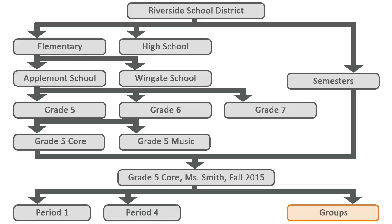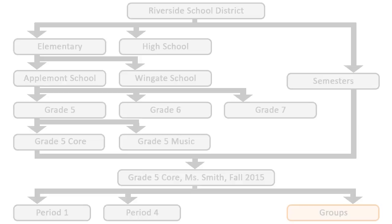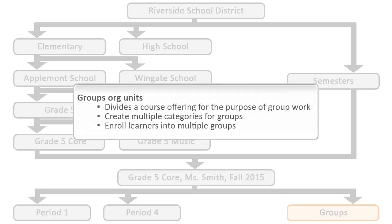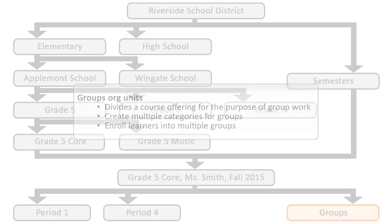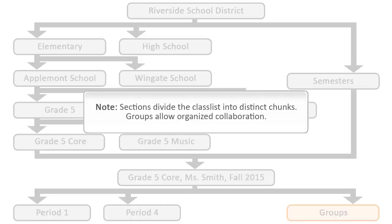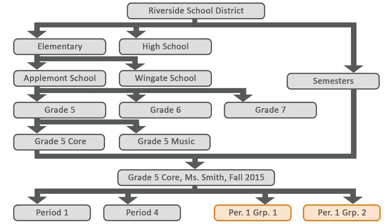Groups provide an additional layer of organization to the tree structure. Groups divide a course offering for the purpose of group work. You can create multiple categories for groups and enroll learners into one or more groups. Sections divide the class list into distinct chunks, while groups allow organized collaboration. In this example, the class is divided into two collaborative groups for an in-class assignment.